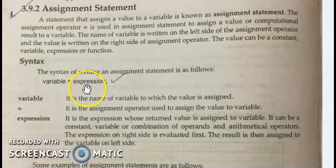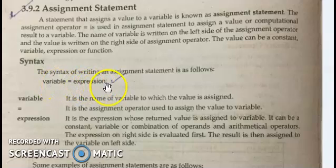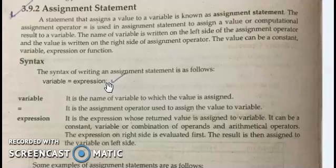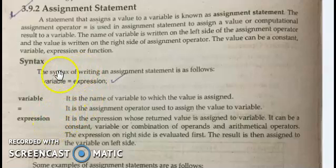Here there may be some expression or some value, and at the end a semicolon. This semicolon is very important — you must include the semicolon at the end of any assignment statement. If you don't put this semicolon at the end of the statement, there will be an error in the execution of the program. Also, if you put the expression on the left side and the variable on the right side, there will also be an error. So you must follow the syntax: variable, assignment operator, and expression — where expression may be a variable or a constant value.